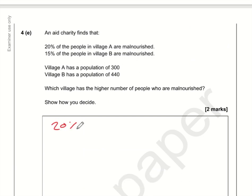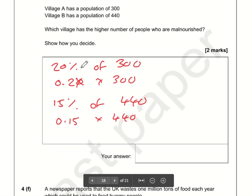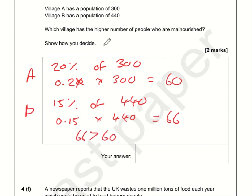For part e, we need 20% of 300 and 15% of 440. The percentage multipliers are 0.2 for 20% and 0.15 for 15%. 0.2 times 300 is 60 for village A, and 0.15 times 440 is 66 for village B. Since 66 is greater than 60, village B has the higher number of people.